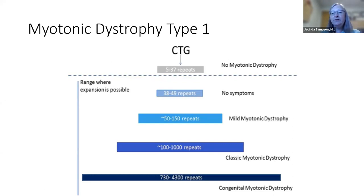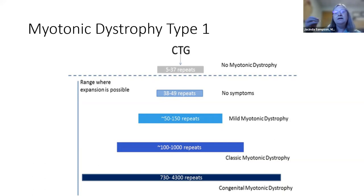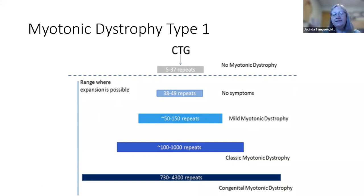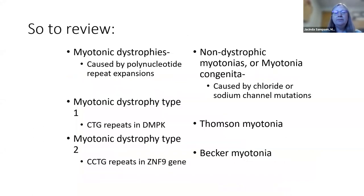These CTG repeats occur in everybody — it's the number that matters. People without myotonic dystrophy have 5 to 37 repeats. There is a pre-mutation range of 38 to 49 repeats, where the person may not have symptoms but expansions may occur in future generations. A mild range is generally 5 to 50 repeats, classic range 100 to 1,000, and congenital 730 up to 5,000, though this number is not a perfectly predictive measure.